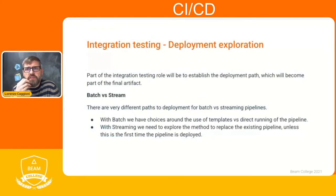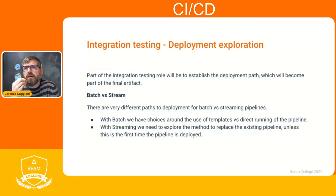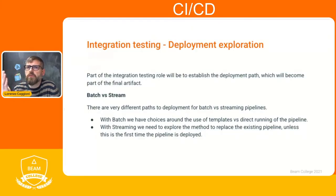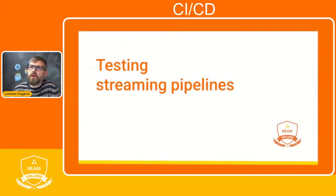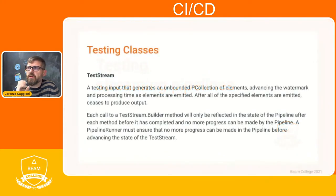Another difference to take into account between batch and streaming is the deployment method. For batch pipelines there's not too much to decide, but for streaming there are some decisions to make — for example whether you want to update your existing pipeline, drain your pipeline before deploying the new one, or cancel it. Streaming pipelines are a little more complex to deploy and test, so let's focus on those for a minute.